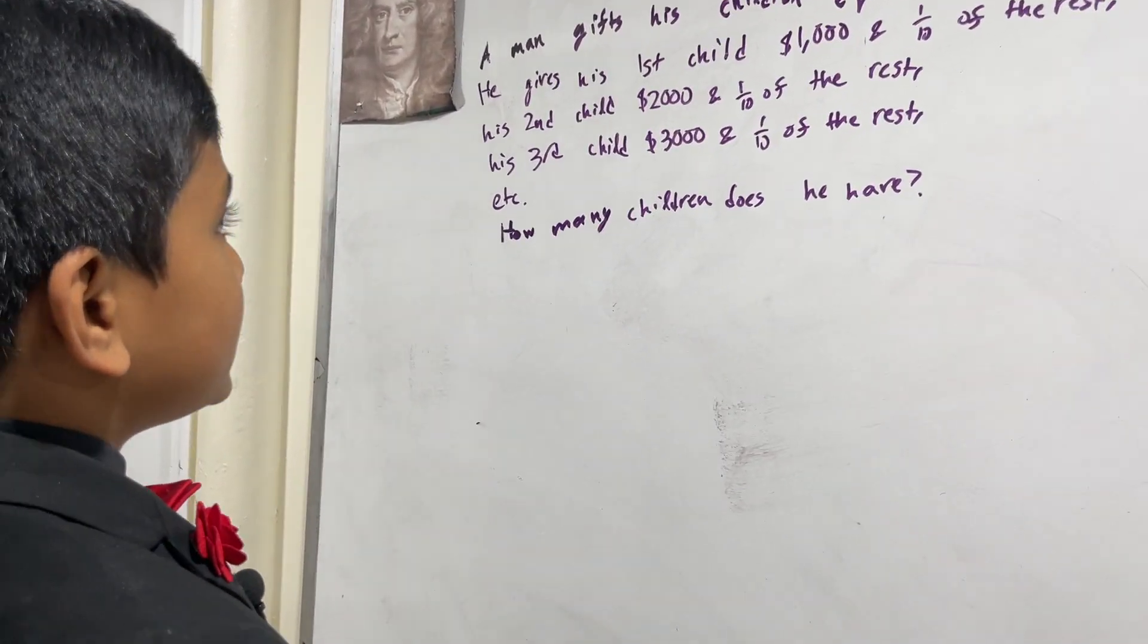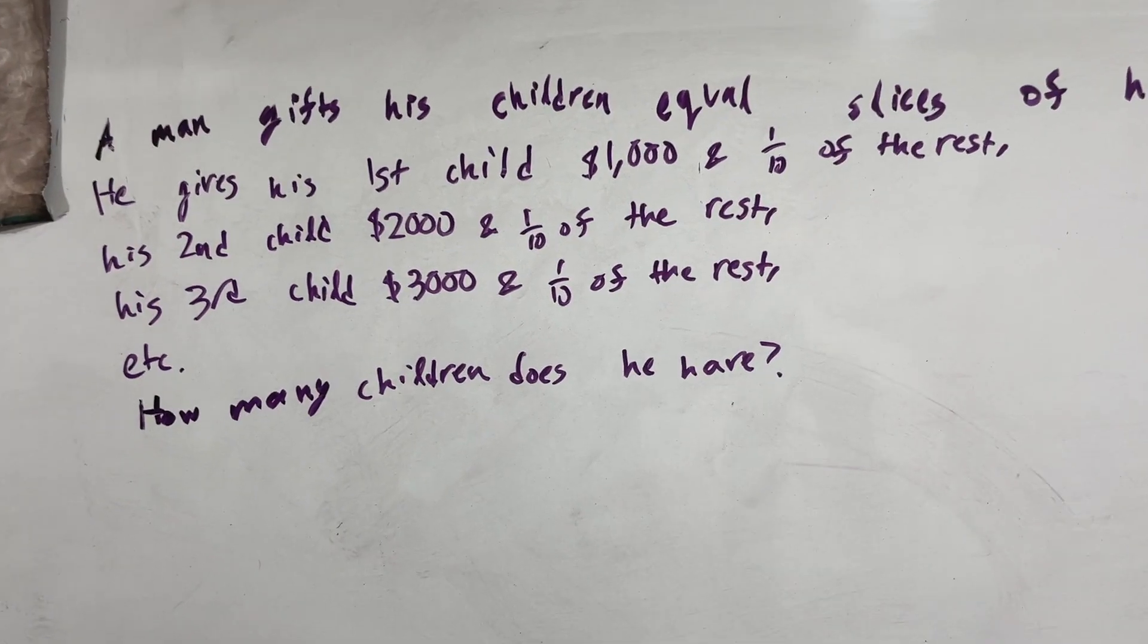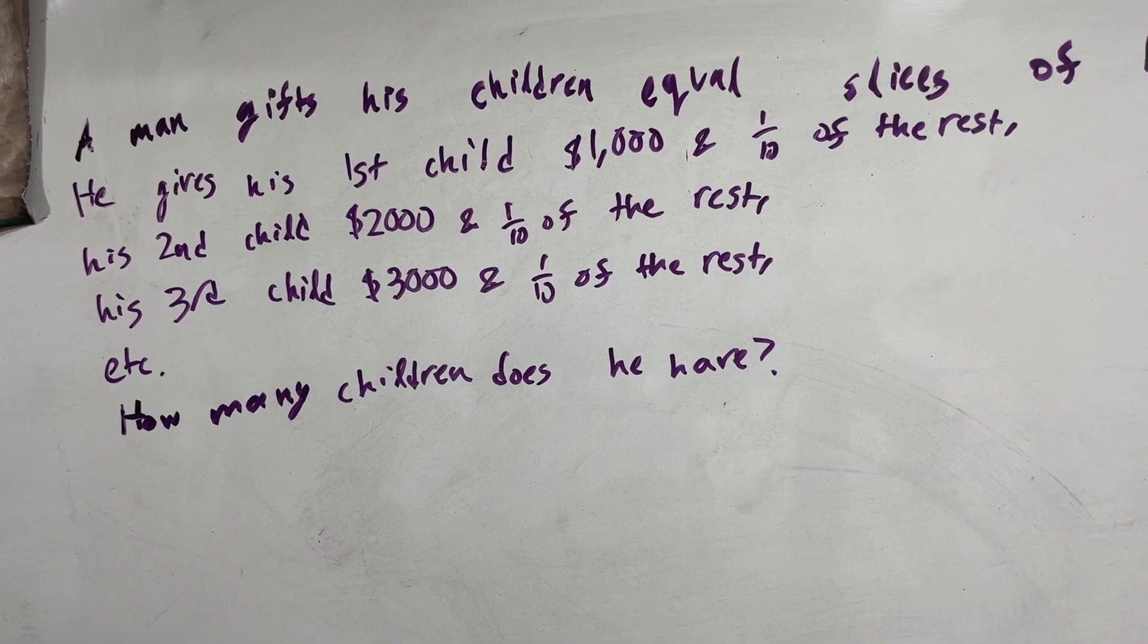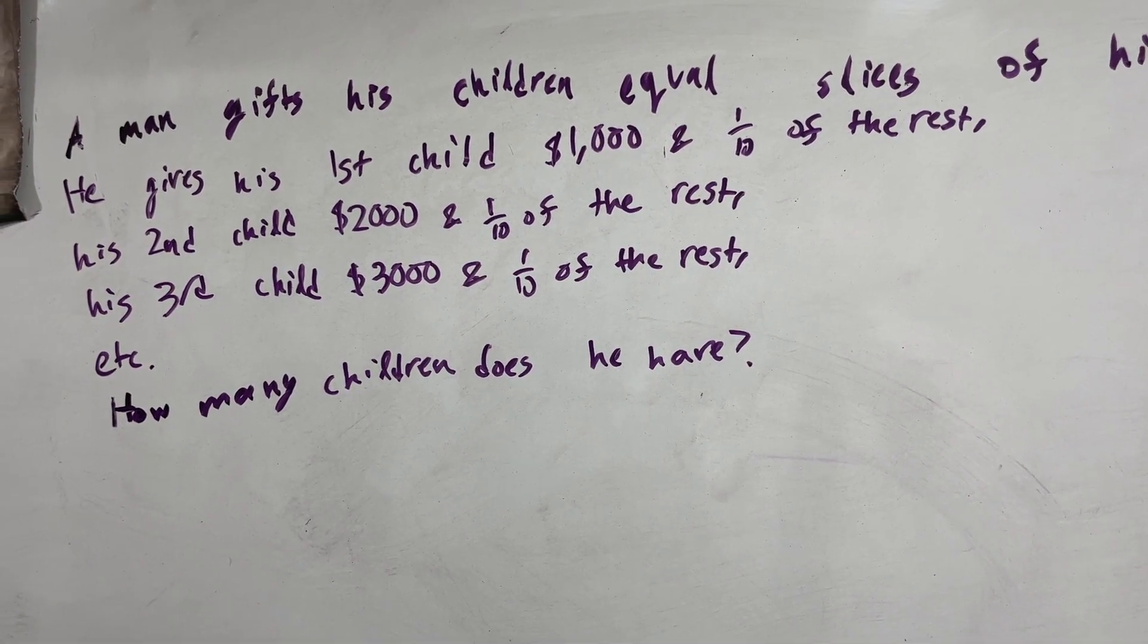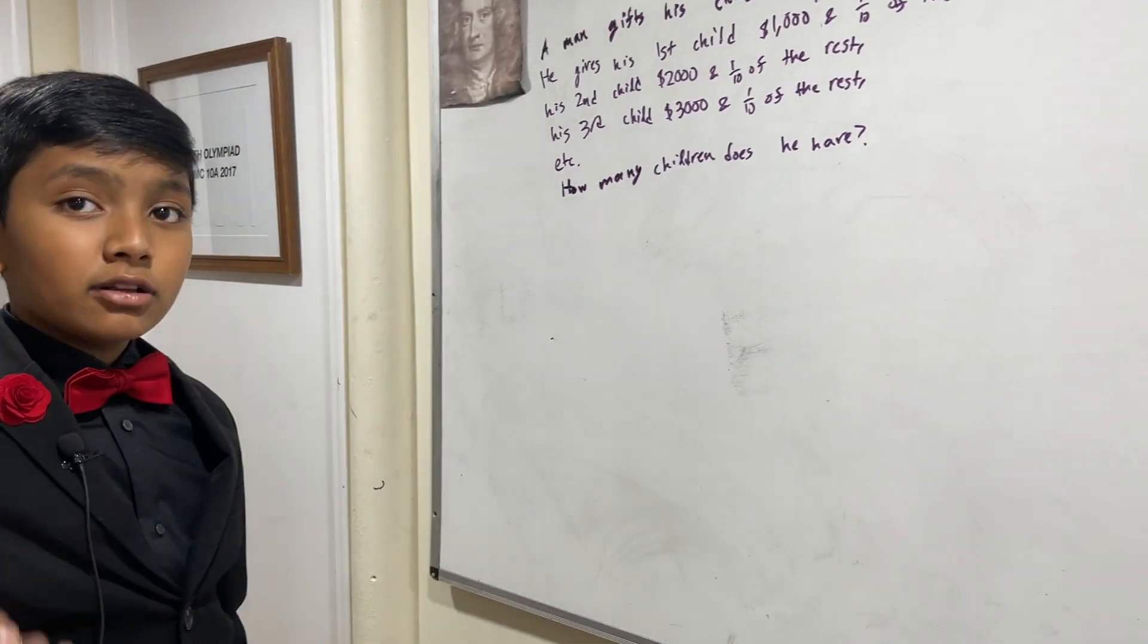A man gives his children equal slices of his inheritance. He gives his first child a thousand dollars and one tenth of the rest, second child two thousand dollars and a tenth of the rest, third child three thousand and a tenth of the rest, etc. How many children does he have?